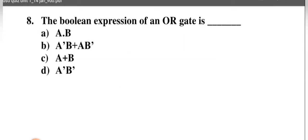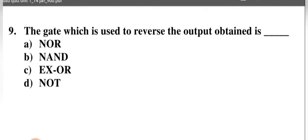Next, the Boolean expression of an OR gate is A plus B, so option C is correct.